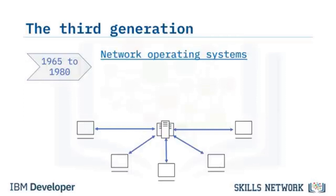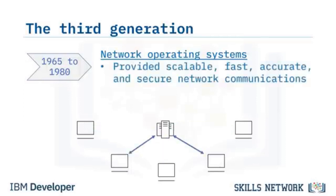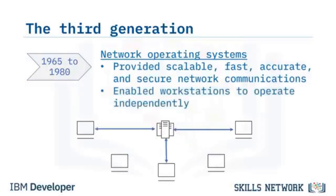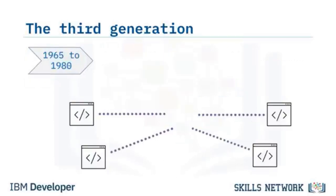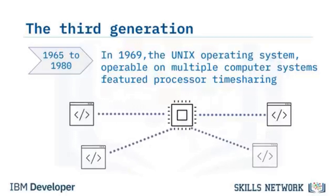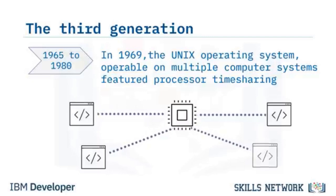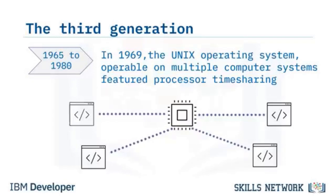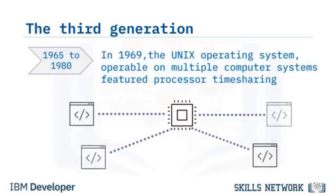This generation saw the development of network operating systems that provided scalable, fast, accurate, and secure network traffic and communications, and enabled each workstation to operate independently. In 1969, the UNIX operating system offered a new innovation — an operating system installable on multiple computer systems, featuring processor timesharing that enabled multiple users to interact nearly simultaneously with a central computer.